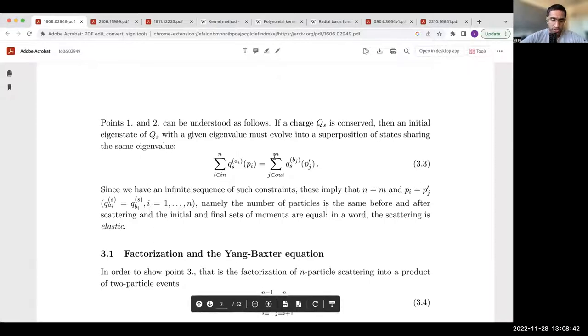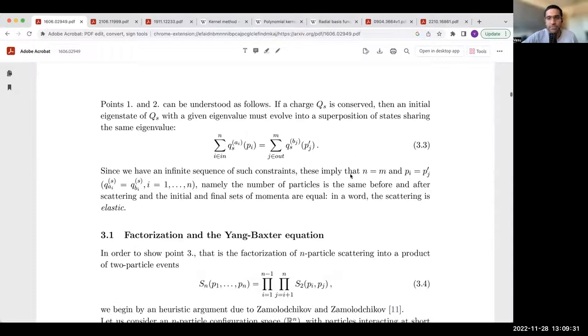These properties are secretly a consequence of the nature of these conservation laws. Look at equation 3.3. If you want this polynomial to be conserved for every S, then this can only hold trivially. The momenta get reorganized. There's just a trivial algebraic equality that demands M equals N, therefore no particle production, and that p_i equals p'_j. So integrable scattering is just a reshuffling of the kinematics.